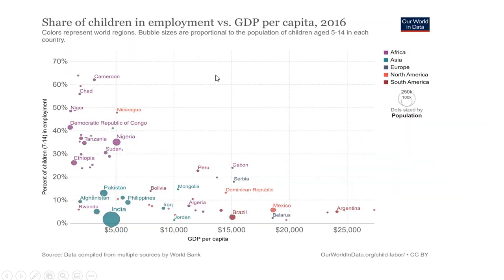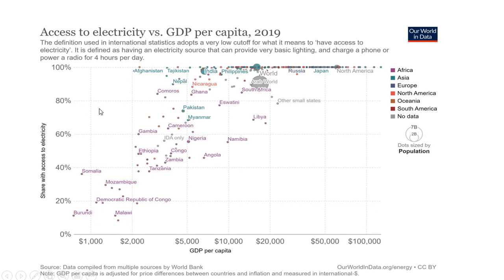The share of children in employment versus GDP per capita: countries with higher GDP per capita have fewer children employed compared to those with low GDP per capita. Access to electricity versus GDP per capita also shows a positive association.